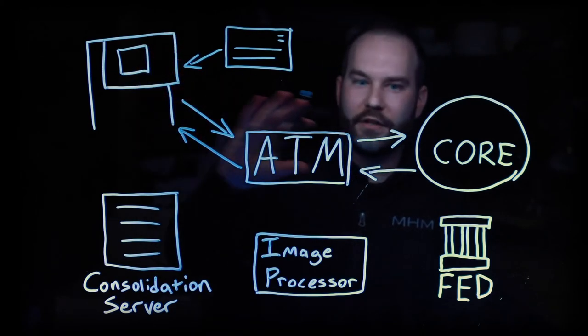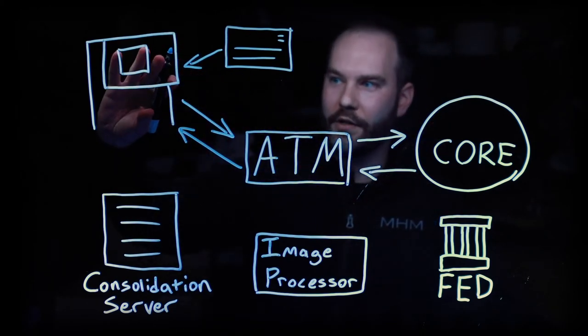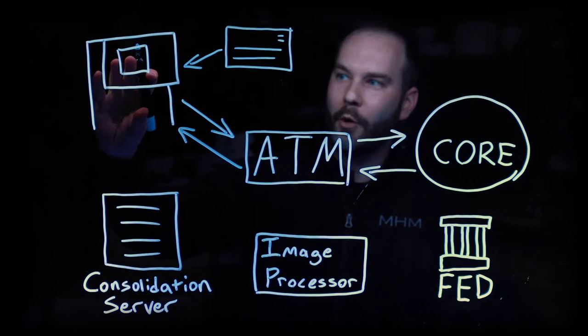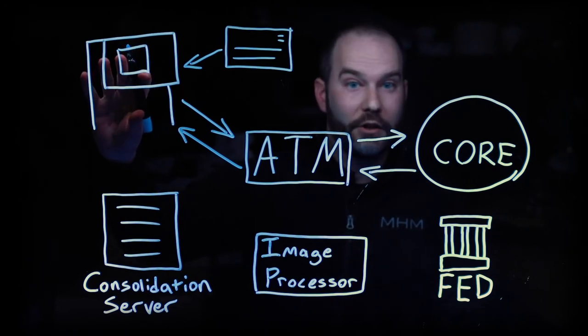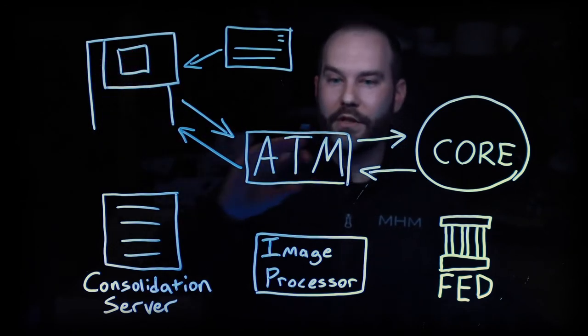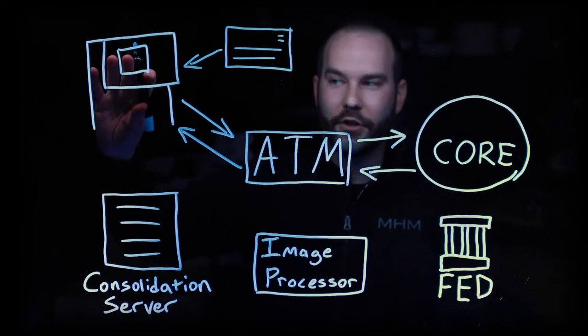So at this point we have a semi-complete deposit, and at the ATM we have scanned images of the front and the back of the check and an XML file that was sent from the ATM network with all the deposit information.